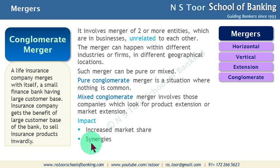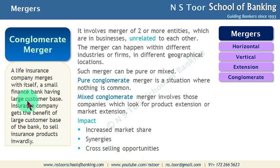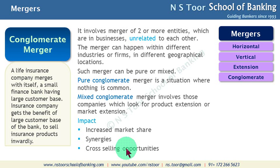There will be synergies, and third is cross-selling opportunities. The small finance bank's customers can be offered insurance products, and the life insurance company's original customers can be offered banking services. So there is an opportunity for cross-selling. I'm sure the contents of this video make it clear as to what conglomerate merger is. Thank you for watching the video.